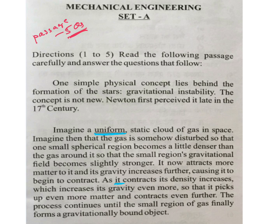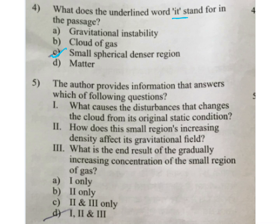Question: The author provides information that answers which of the following — i) What causes the disturbances that change the cloud from its original static condition? ii) How does the small region's increasing density affect its gravitational field? iii) What is the end result of the gradually increasing concentration of the small region of gas? Answer is C.